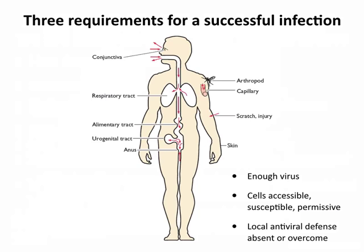We don't know how much virus you need for most virus infections, but you need enough. Second, the virus must encounter cells that are accessible and have receptors — they must be susceptible to infection — and permissive, meaning the virus can actually replicate even after getting in. Finally, the defenses that would normally inactivate the virus or prevent it from replicating have to be inactive or overwhelmed. Sometimes that's simply by having a large virus inoculum.